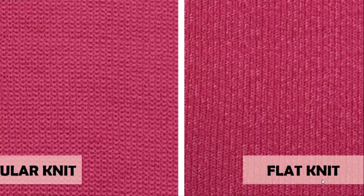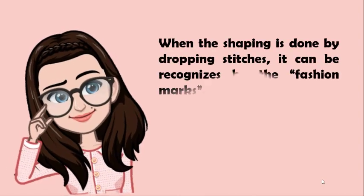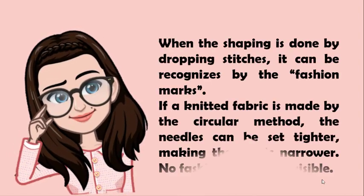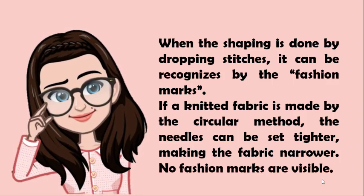Knitted fabrics can be made flat or circular. When the shaping is done by dropping stitches, it can be recognized by the fashion marks. If a knitted fabric is made by the circular method, the needles can be set tighter, making fabrics narrower. No fashion marks are visible.